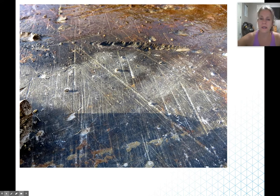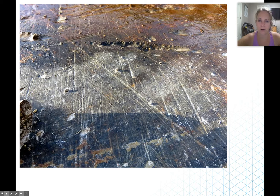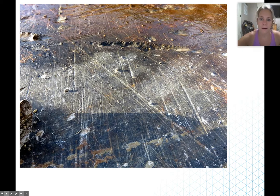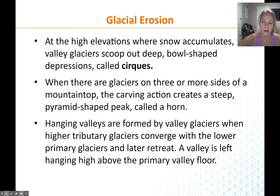We can tell where glaciers have been in the past during the last ice age by looking at rocks like this. If you ever go to Yosemite National Park here in California, you would see a lot of this evidence. In any U-shaped valley you'd see a lot of evidence of glacial erosion.